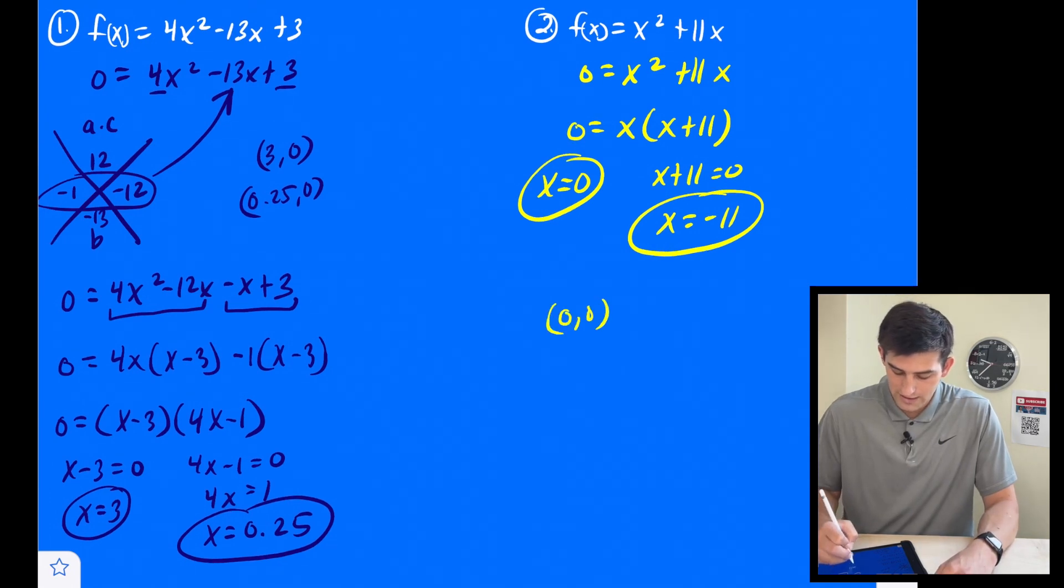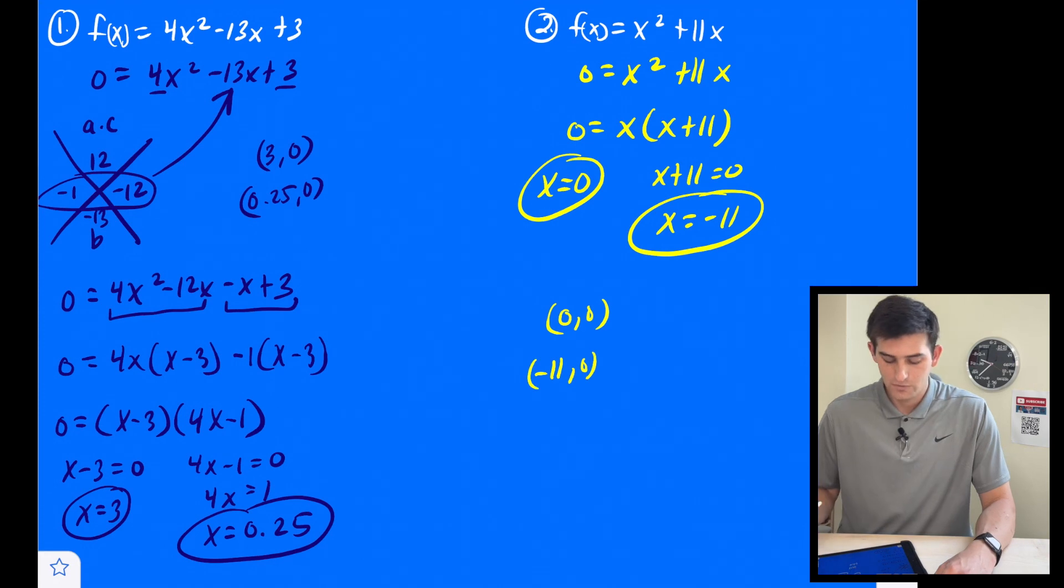So those are our two zeros. So we have zero, zero and negative 11, zero. Okay, and that's how you can find the zeros of a quadratic function.